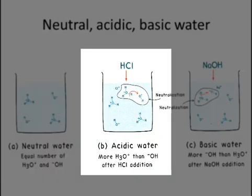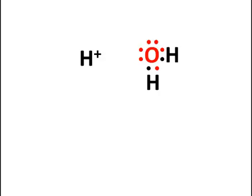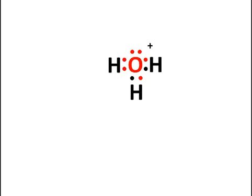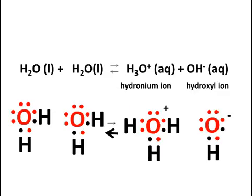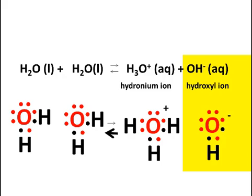However, when an acid — for example hydrochloric acid — is added to water, that changes the balance between hydronium and hydroxide ions. There are more hydronium ions than hydroxide because of the addition of hydrochloric acid. This is because hydrogen ions from the hydrochloric acid react with water to form hydronium ions, increasing the number of hydronium ions present. This then decreases the number of hydroxyl ions because those excess hydronium ions are neutralized by hydroxyl ions that are already in the water.